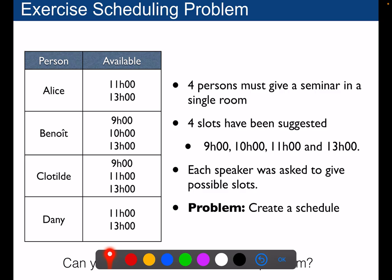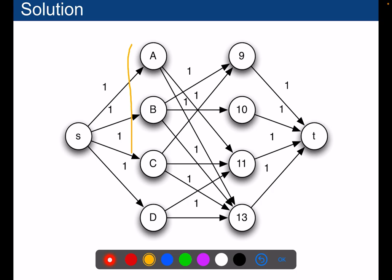Can you model this as a Max-Flow problem? The way we will build that is by creating a graph. So here we have all the persons and we have here the slots.